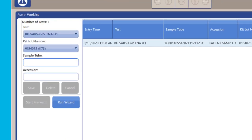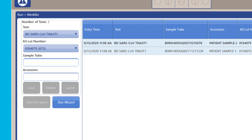For all remaining sample buffer tubes, repeat selection of the UDP, entering of sample buffer tube information into the work list, and selecting the appropriate kit lot number.